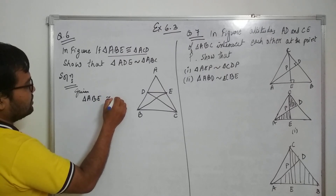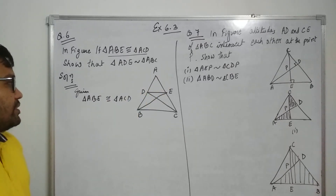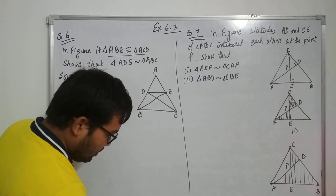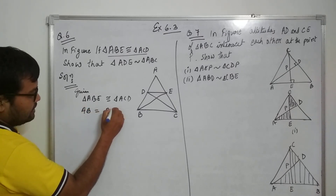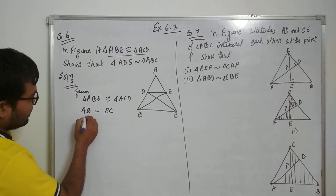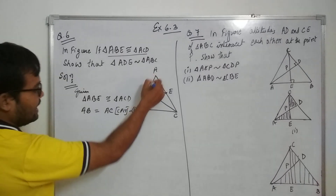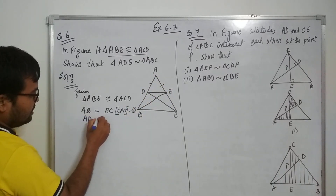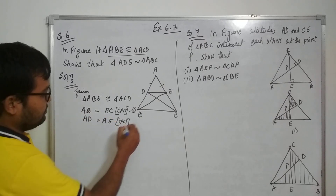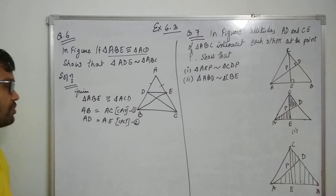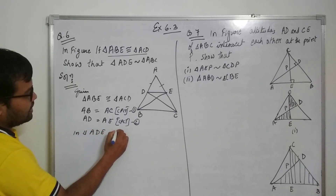Given triangle ABE congruent to triangle ACD, we can conclude that AB equal to AC — this is by CPCT (corresponding parts of congruent triangles), and we take this as equation number one. Also, we have AD equal to AE by CPCT — this is equation number two.